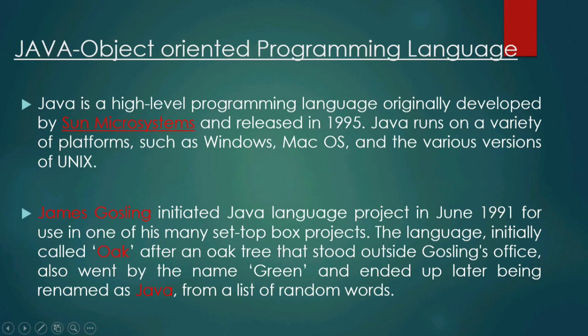James Gosling invented Java at Sun Microsystems. The project was started in 1991, and the first version was released in 1995. When it was first released, the name was Oak, and after that the name was changed to Java.